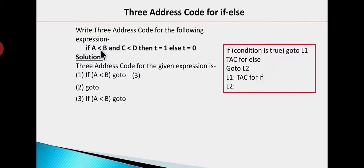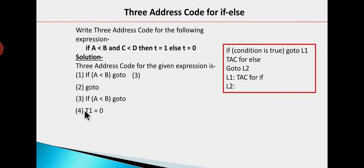If the first condition a less than b is true, we then check the second condition. If the second condition is false, then we need to go to the else part — go to statement 3. If a less than b is true and c less than d is also true, we jump to the if part — go to statement number 4.